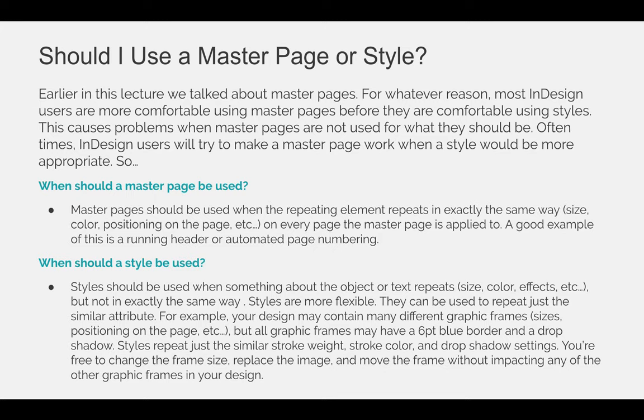A good example of a master page use is a running header or automated page numbering. A style should be used when something about the object or text repeats — the size, the color, or an object effect like a drop shadow — but not in exactly the same way. Styles are more flexible. For example, your design may contain different graphic frames in different sizes and positions, some squares some ovals, but all may share a six-point blue border and a drop shadow. Styles repeat just those similar attributes — stroke weight, stroke color, drop shadow — while you remain free to change the size and placement of each frame without impacting the others.